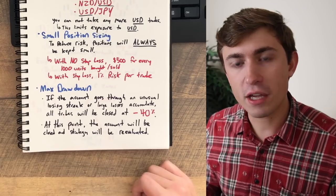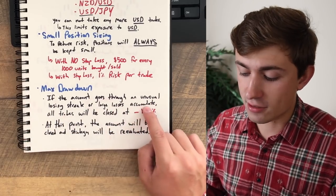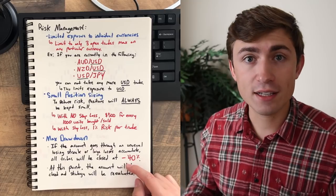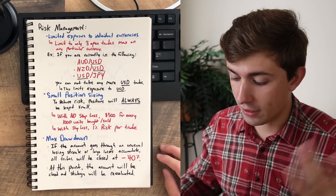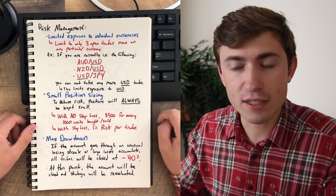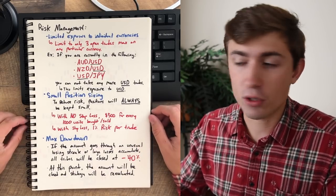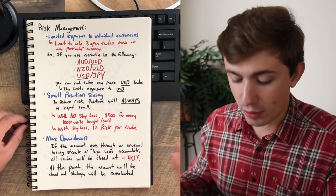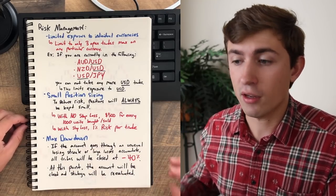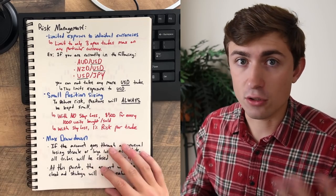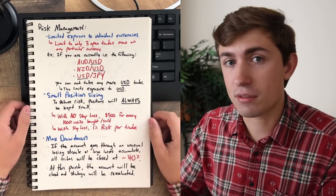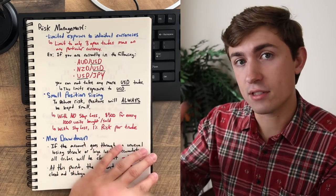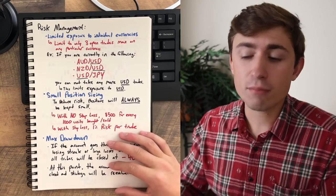Max drawdown. This is a big one, guys. Not a lot of people think about this. If the account goes through an unusual losing streak or large losses accumulator, all trades will be closed at negative 40%. This is really, really important to define because a lot of times traders are just thrown off guard when things don't work out, right? And they just freak out and they're like, well, what's happened here? I've lost a bunch of money. And when do I cut this, cut the trades? And when do I get out? Well, for me, negative 40% is the time to get out of the trades and to reevaluate the strategy. At this point, the account will be closed and strategy will be reevaluated.